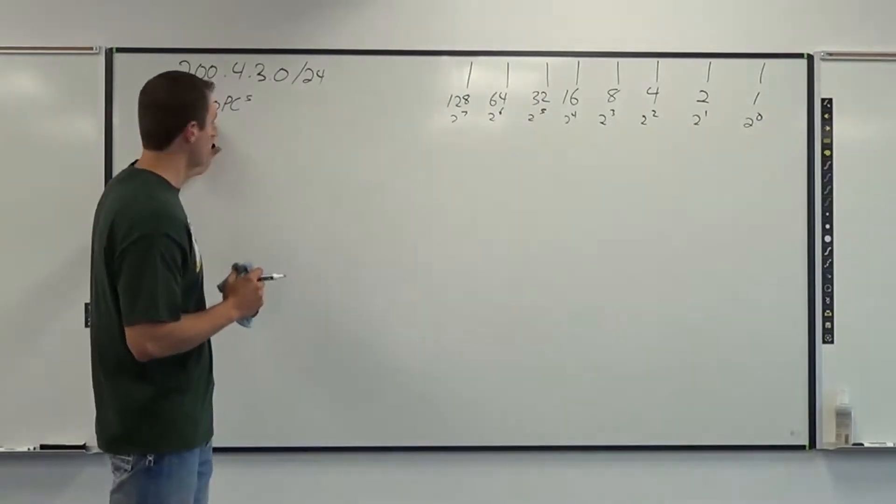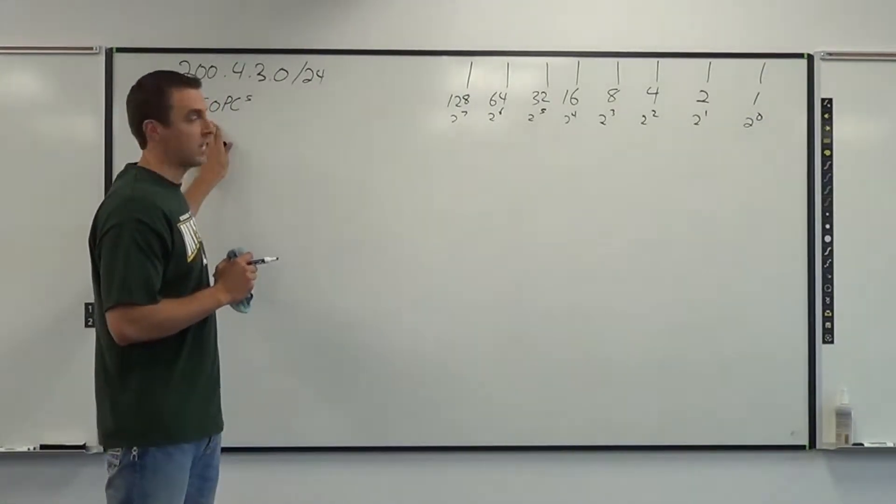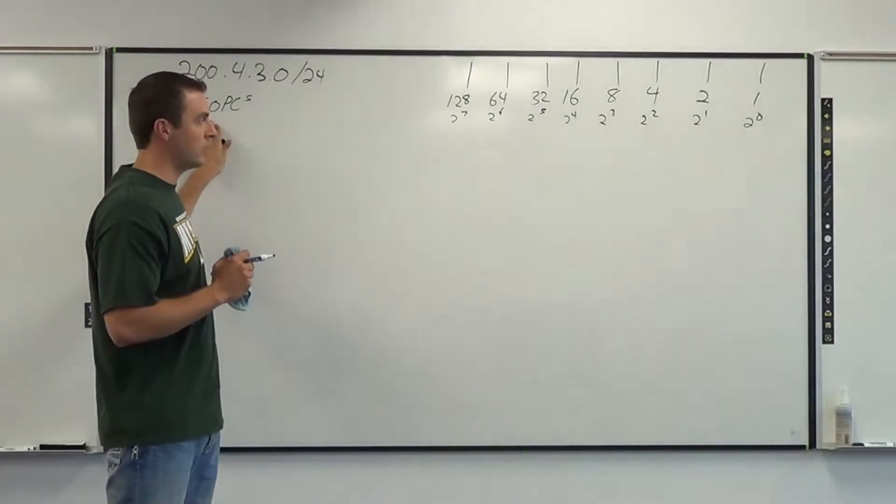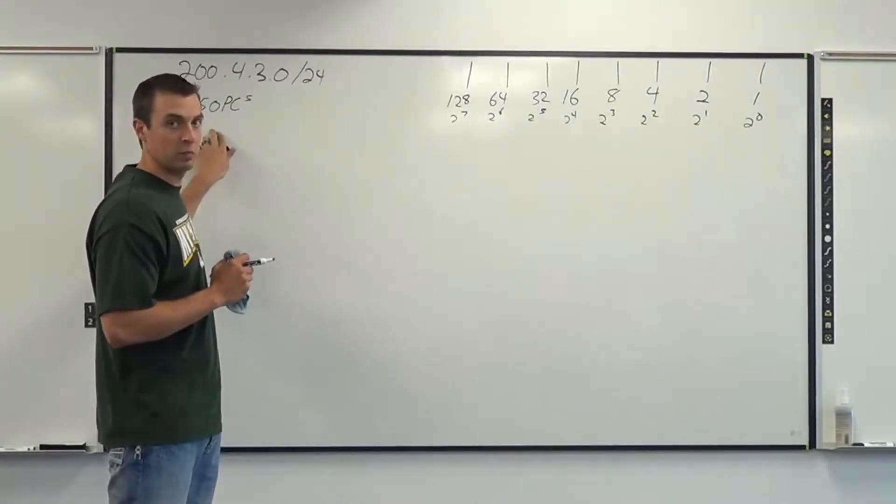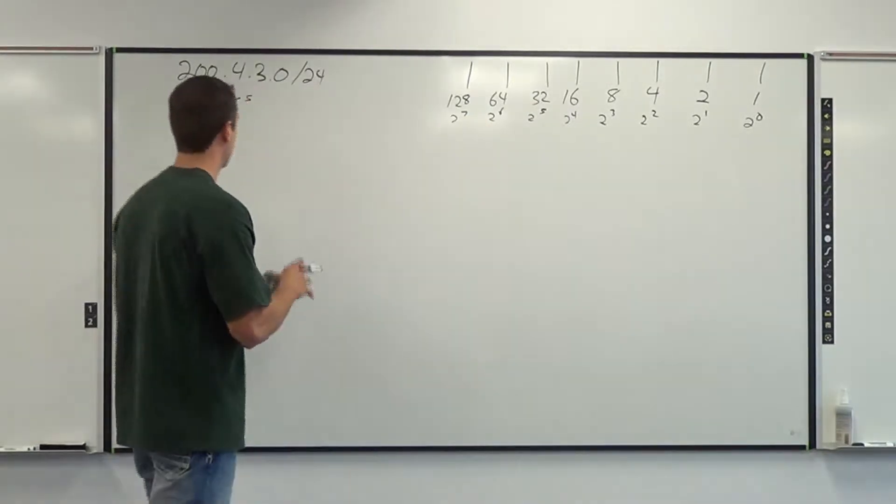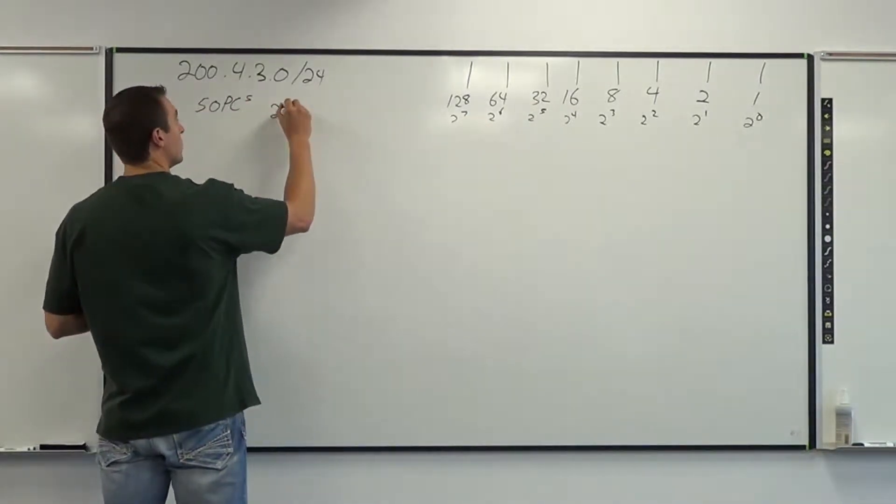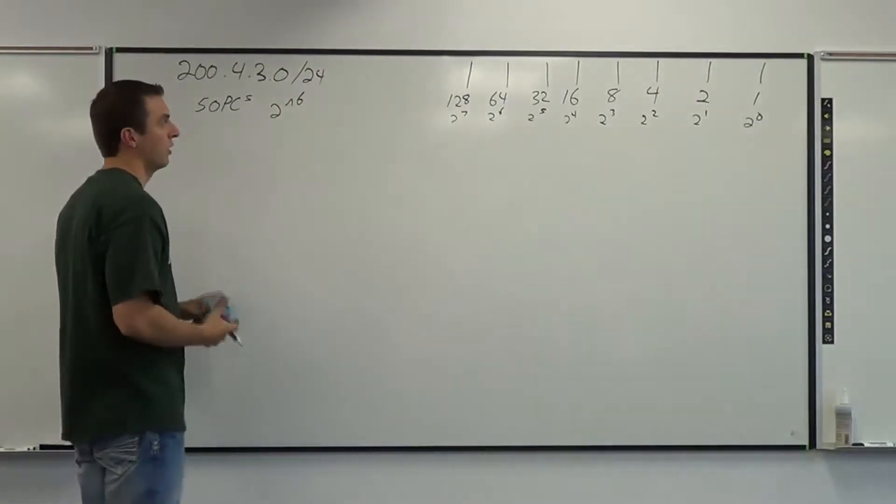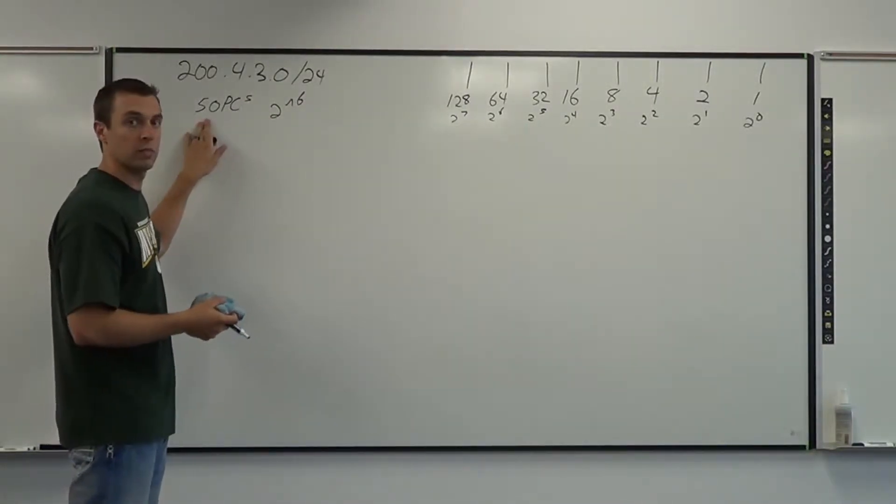So what I do is I take a look at my chart and ask myself, 2 to what power is going to give me at least 50 PCs, and in our case here it's 2 to the 6th. 2 to the 6th is 64, and that's more than enough for our 50 PC requirement.